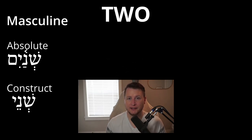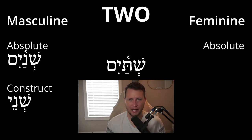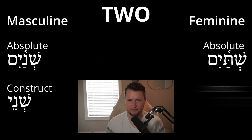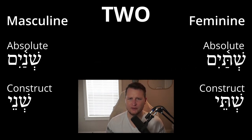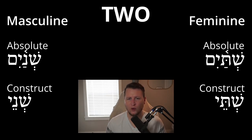Shatayim — two, feminine, absolute. A mnemonic device: 'you should tie your laces.' Let me know in the comments what are your favorite mnemonic devices to help you memorize your vocabulary. Shatay — feminine, construct. So that's one and two across masculine and feminine, absolute and construct forms.